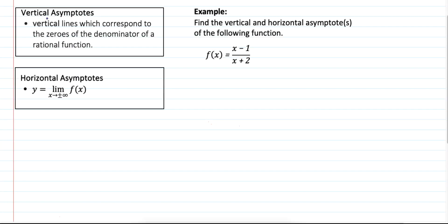Vertical asymptotes are vertical lines which correspond to the zeros of the denominator of a rational function. So, if you have y equal to f(x) over g(x), in order to find the vertical asymptotes, you put g(x) equal to 0 and you solve for x. That is the answer — it's a straight vertical line.